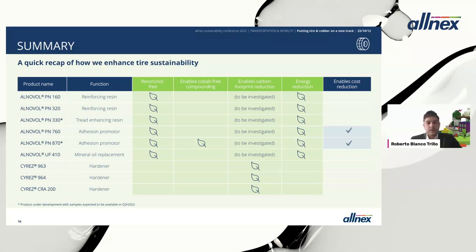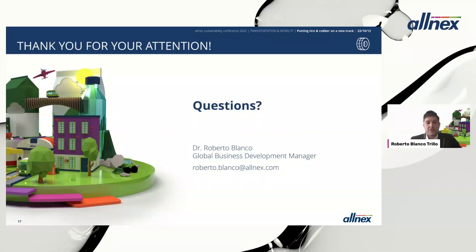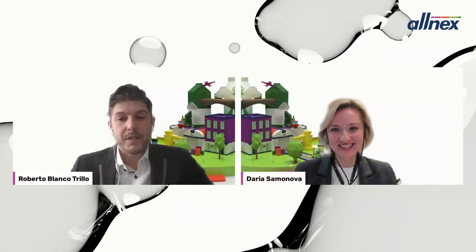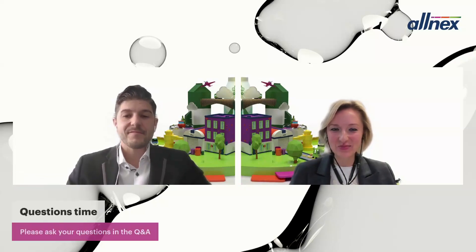That's the final slide and a summary. We have different groups of resins with different benefits depending on the part of the tire they are applied to. What they all have in common is that they are resorcinol-free by definition. The PN870 is additionally reactive enough that you can eliminate cobalt from your compound, and by simply using this technology it comes with energy reduction during production. That's it for now — I have a lot more to tell, but I'm very happy to answer your questions.